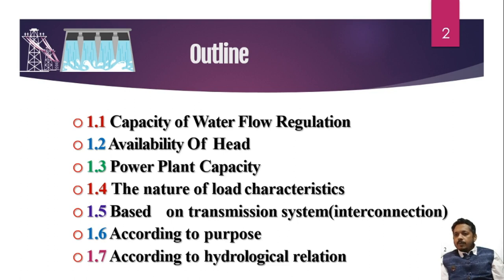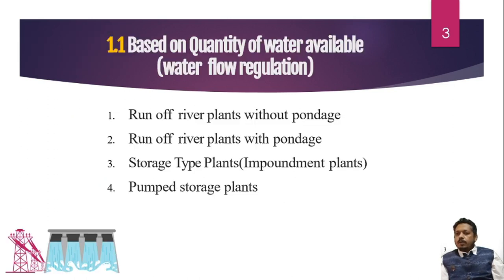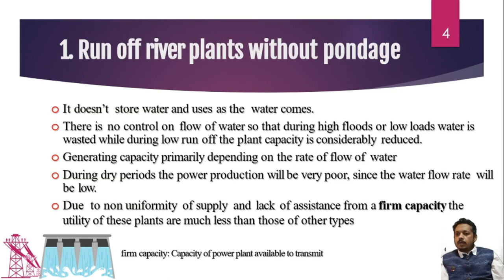Now we will see each in detail. First, based on quantity of water available or water flow regulation — since water quantity varies across different regions, we have four types of hydroelectric power plants: first, run-of-river power plant without pondage; second, run-of-river power plant with pondage; third, storage type or impoundment type plant; and fourth, pumped storage plant. Let's see how each works.